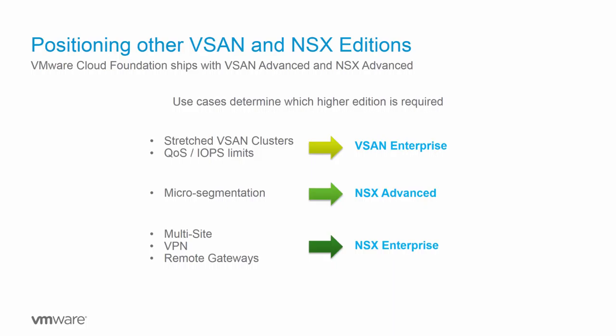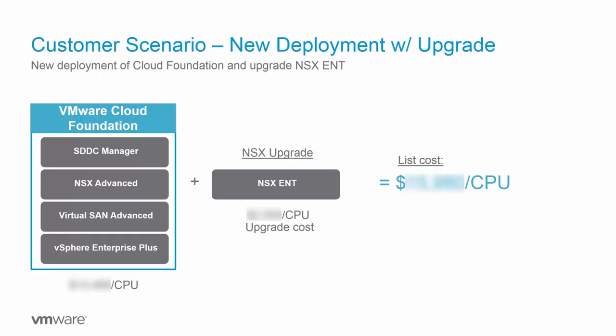This slide reflects when customers want to upgrade their vSAN or NSX Advanced licenses to Enterprise Editions. Upgrading to vSAN Enterprise Edition adds the ability to use stretched clusters and quality of service, or QoS, which limits the IOPS a single VM can use — ensuring business-critical applications always get the IOPS they need. Upgrading to NSX Advanced enables micro-segmentation, which many customers find highly valuable. Upgrading to NSX Enterprise offers multi-site configuration, VPN capabilities, and remote gateways.